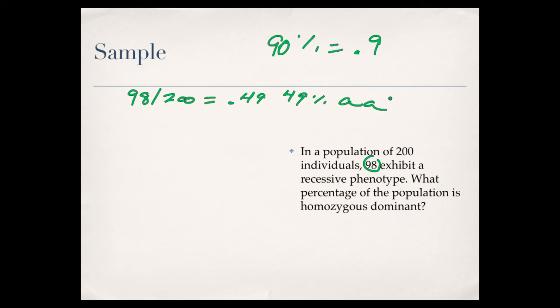So, in order to work our P plus Q equals 1, we've got to find the square root of this right here, 0.49. So, if we say that Q squared is equal to 0.49, take the square root of 0.49, we know that Q is equal to 0.7. And then, from there, just a little simple math.